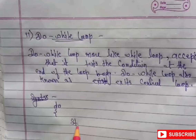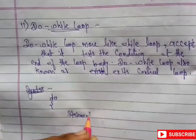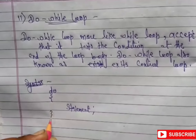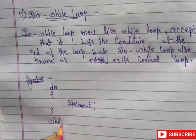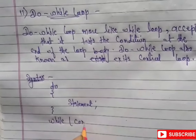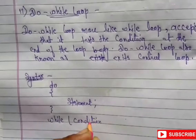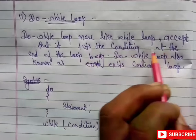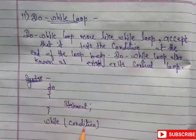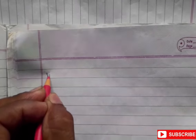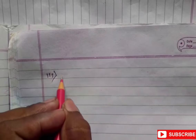Syntax of do-while loop: first we write 'do', open the loop body, write the statement inside, close the loop body, and at the end we check the condition by writing 'while(condition)'.